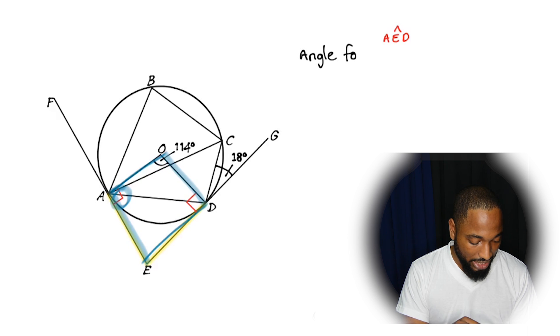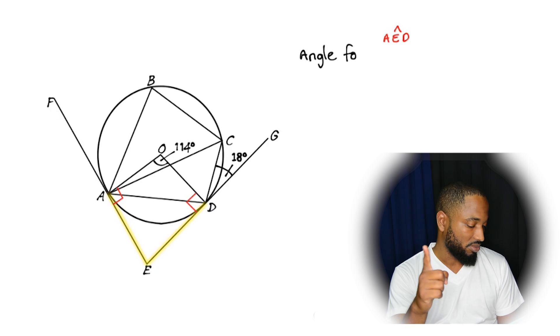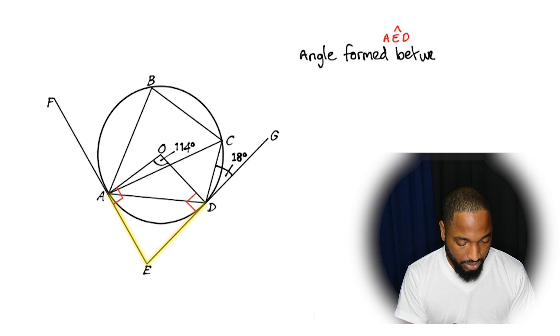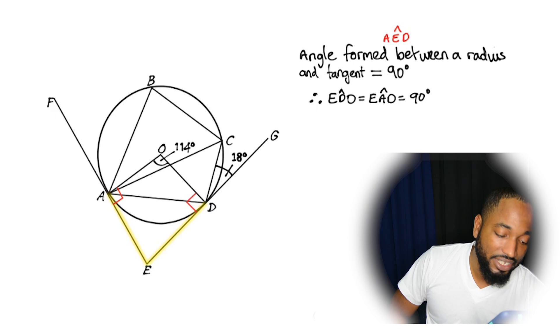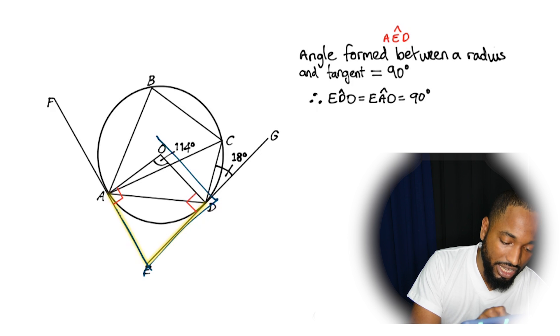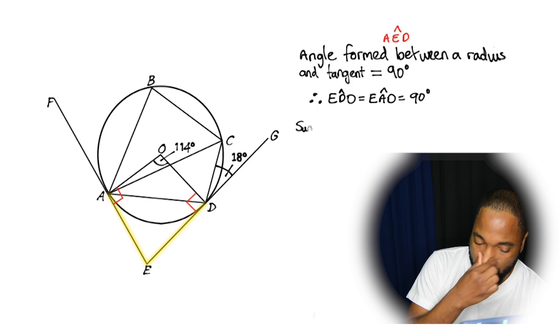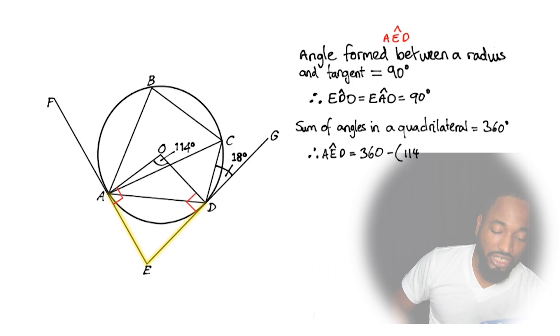How do we know that those angles are 90 because they form a 90 degrees with the radius and the tangent. The angle formed between a radius and tangent equal 90 degrees. That means angle EDO is equal to angle EAO. Both of them are 90 degrees. And now we can see the sum of the angles in a quadrilateral equal 360. Therefore, AED is equal to 360 take away 114 plus 90 plus 90 equals 66 degrees.